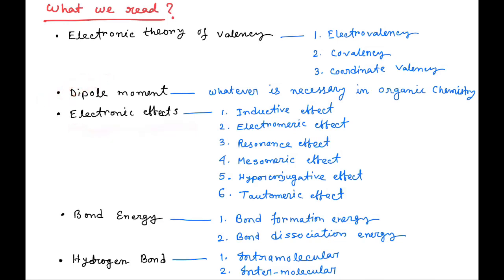Then we come to electronic effects. In electronic effects, first is inductive effect with examples, second is electromeric effect, third is resonance effect, fourth is mesomeric effect - both equivalent and non-equivalent. Then we will see hyperconjugative effect and tautomeric effect. We will discuss all these effects and understand them with examples.